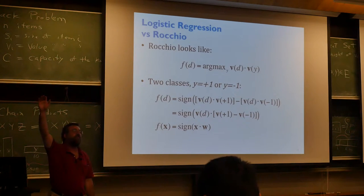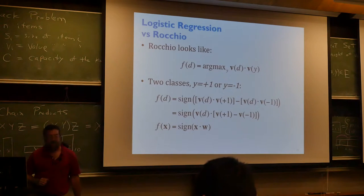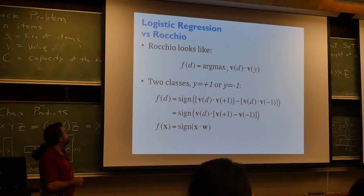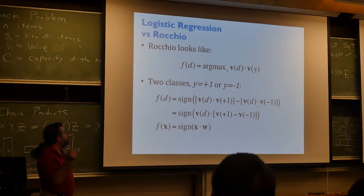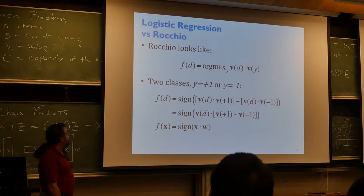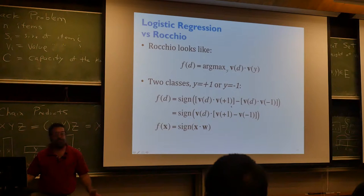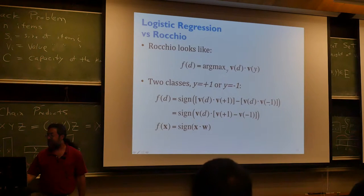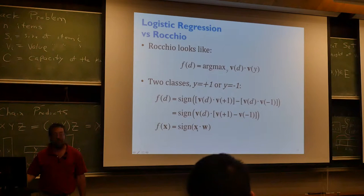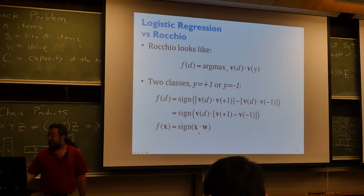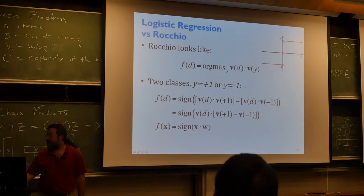To motivate logistic regression: it has basically the same form as Rocchio. In Rocchio we're looking at the argmax of the inner product of the document representation and the class representation. If we just have two classes, positive and negative, we can look at the sign of the inner product with the document and the positive class versus the negative class. With a little simplification, it becomes just the sign of an inner product between x and a weight vector w.